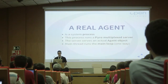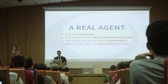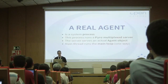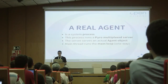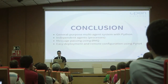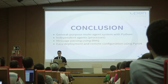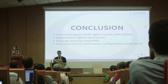So a real agent is a system process, and this process runs a Pyro multiplexer server, and the server serves the actual agent Python object. The main thread runs the main loop — because as I said, usually an agent is just waiting for incoming messages, so it's just polling on all the different input sockets that it has. As a conclusion, Python was great for creating a general-purpose multi-agent system. The agents were independent thanks to the use of processes, because unfortunately with the GIL and the most famous implementations of Python, that is not possible using threads. Message passing is implemented with ZeroMQ, and the deployment and configuration are very easy using Pyro4.